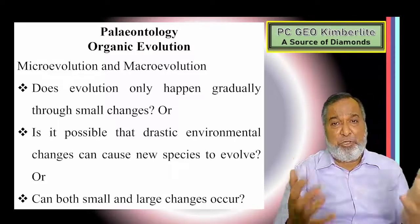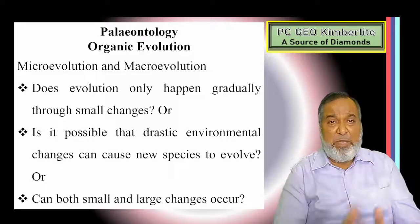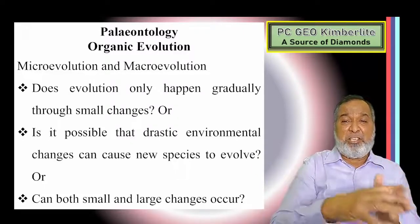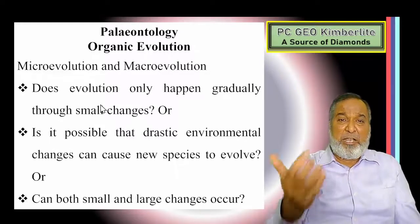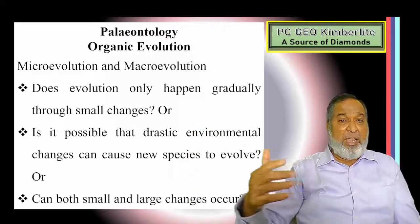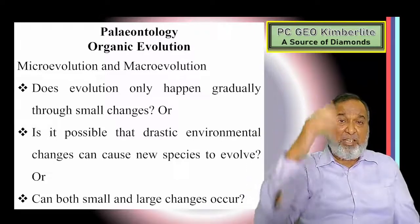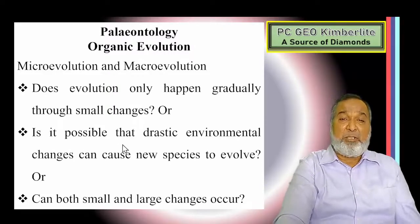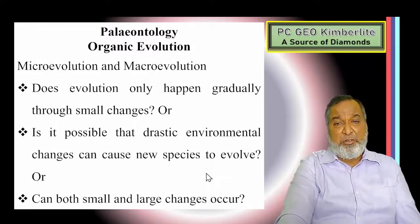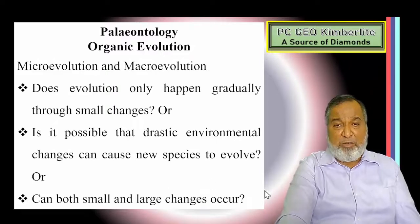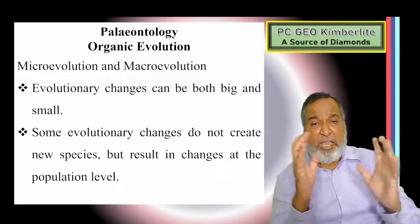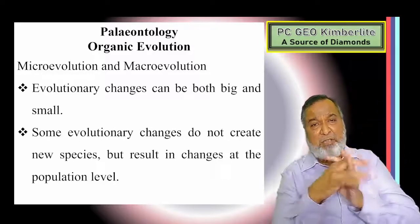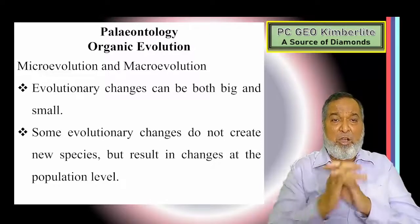The next topic is micro evolution versus macro evolution. Does evolution only happen gradually through small changes, or is it possible that a drastic environmental change can cause new species to evolve, or can both small and large changes occur? Anything can happen — gradual climate change or sudden drastic change. Most animals who could not sustain a drastic change will become extinct. We have to keep our minds open and study whether it is micro or macro evolution.